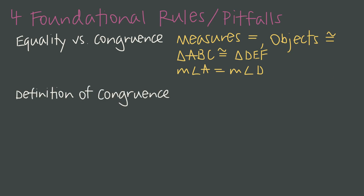The second rule is specifically the definition of congruence. This is the rule that lets us switch between objects and their measures. For example, if we know two line segments are congruent, we can say that their lengths are equal — we have that legal bridge to move back and forth between congruence and equality.